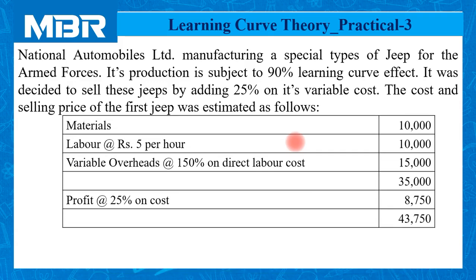Materials: rupees 10,000. Labor at the rate of rupees 5 per hour, total labor cost 10,000. Variable overheads at the rate of 150% on direct labor cost, that is rupees 15,000. So total is 35,000, plus profit at the rate of 25% on cost — 25% of 35,000 is 8,750. So the sale price of the first Jeep was 43,750.